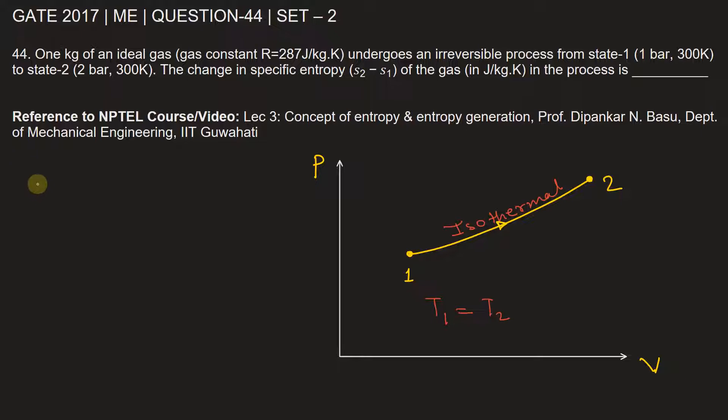For an ideal gas, change in entropy delta S equals Cp, that is heat capacity at constant pressure, times ln T2 by T1 minus R ln P2 by P1.